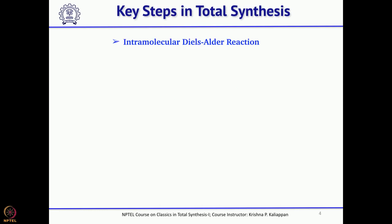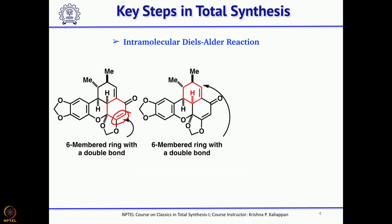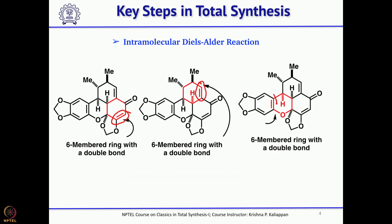Now let us see how an intramolecular Diels-Alder reaction could be successfully used in this total synthesis. For example, if you have to make this double bond using an intramolecular Diels-Alder reaction, what should be the precursor? Likewise, if you have to make a second double bond using intramolecular Diels-Alder, what should be the precursor? We will see each option and then choose the right one, followed by oxidative phenolic coupling, as Chapman proposed.